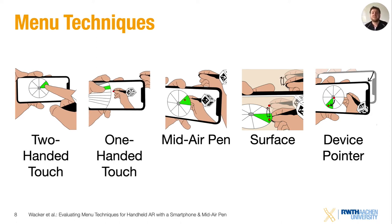While our techniques achieved high selection precision, the surface menu seemed to be less precise compared to the others. One potential reason is that it is the only technique that required movement to a correct 3D position, while the other techniques use ray casting or direct touch. As expected, using the surface technique also took longer and required more movement of the device. We thought that the haptic feedback could alleviate some of these drawbacks, but participants placed this technique mostly in last place when ranking all the techniques, suggesting that was not the case.